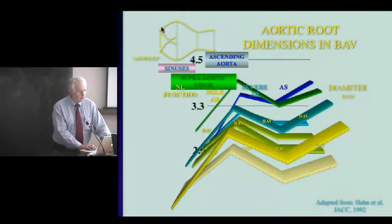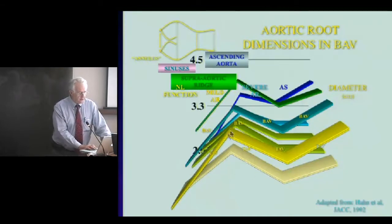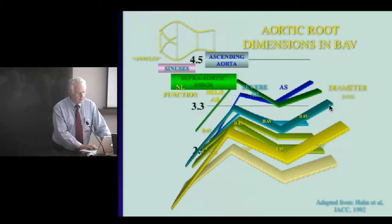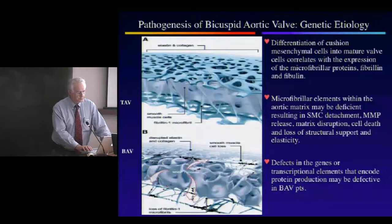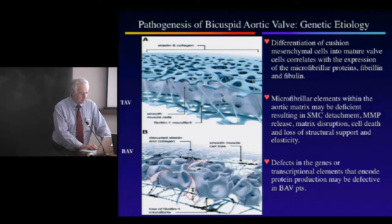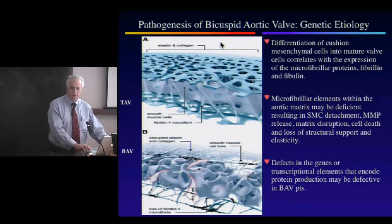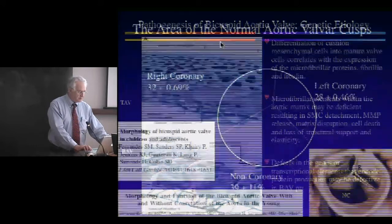Looking at aortic root dilatation, we can measure the root — the annulus of the valve is probably a thick rim of tissue, and we have to measure it at various places. In the study by Hahn et al., you can see how the various parts of the aorta increase in size over time, with 3.3 being the two-plus Z-score level for an aortic root in adults. A cartoon on MMP shows what happens in the normal aortic root versus the bicuspid aortic valve, where the support tissue for the aortic wall is markedly deficient from MMP release.